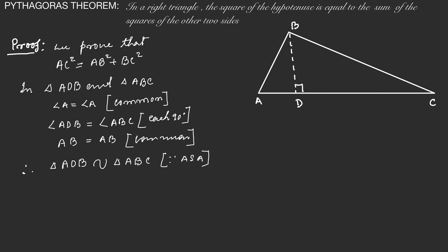When these two triangles are similar, their sides are proportional. So we write: AD over AB equals AB over AC. This implies AB times AB, that is AB square equals AD times AC. We take this as equation number 1.